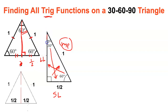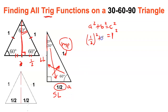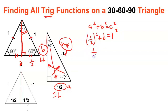To find the measure of this side, I'm gonna use the Pythagorean theorem, which says a² + b² = c². My hypotenuse is always c. This could be a, this could be b — it does not matter. So let's call the short leg a. I'm gonna have (1/2)² plus b squared equals c squared. One half squared is one half times one half, which gives me one quarter, plus b² equals 1² which is 1.